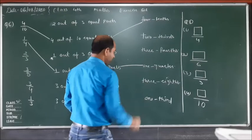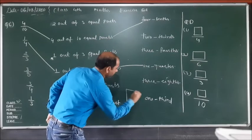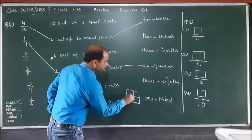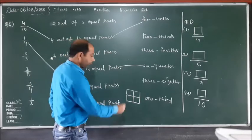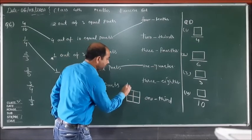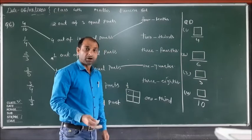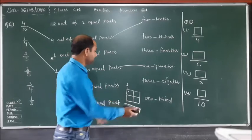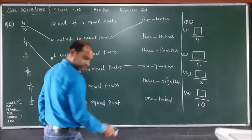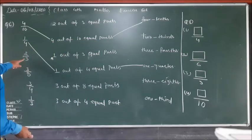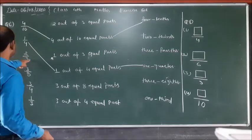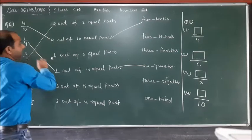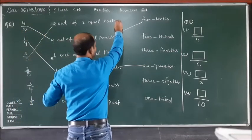If we take a box and divide it into four equal parts, one part is one upon four, or one quarter. Next: two upon three means two out of three equal parts, which we read as 'two-thirds.'